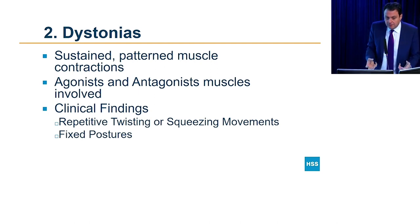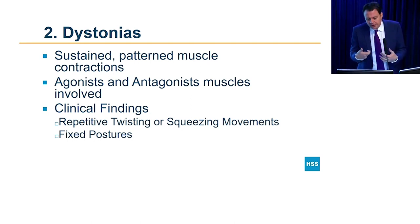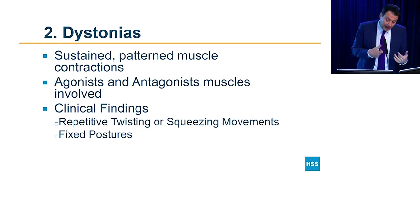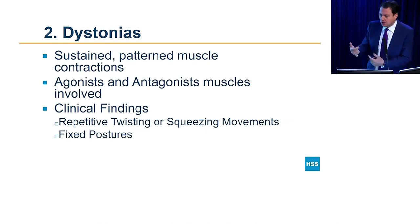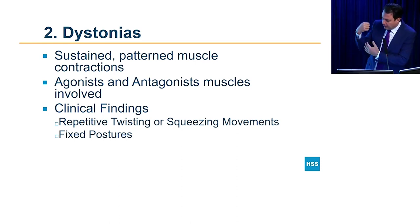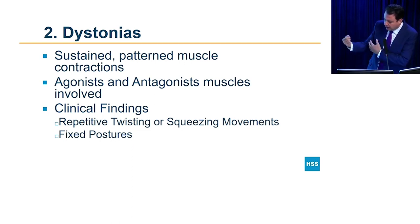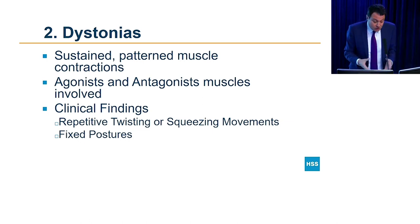Dystonias are sustained muscle contractions that result in movement of a joint, head, or arm. It's basically a fight between opposing muscles — for example, your biceps and triceps. One is trying to flex your elbow, the other is trying to extend it, and the result is a kind of spasm in the muscles.